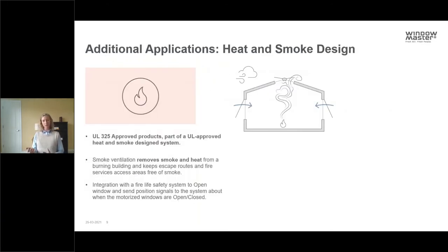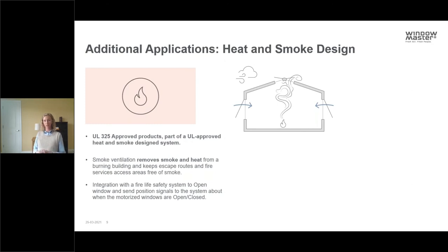Another great application for window actuators, especially in North America, is in a heat and smoke application — using an actuator and control panel as part of a full fire life safety system. Our controllers and actuators would be connected to a notifier system. A lot of our products are UL 325 certified, which means they can be combined with a UL-approved notifying system to allow smoke and heat egress in a project.